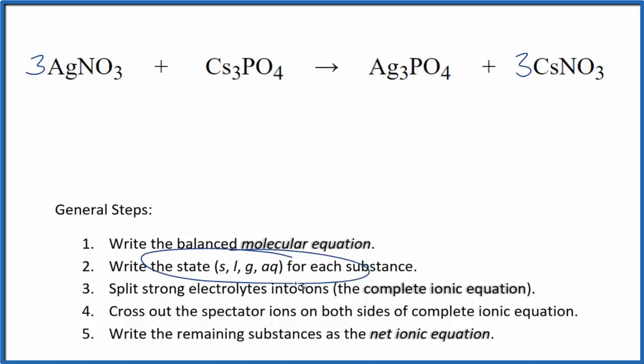Now we're going to write the state for each substance. It looks like this. Nitrates, compounds with the nitrate ion, are very soluble. So we write aqueous, and then cesium phosphate.